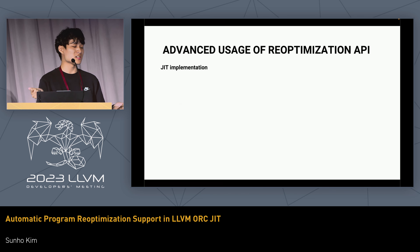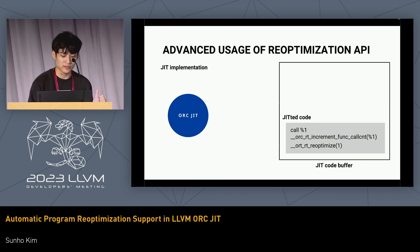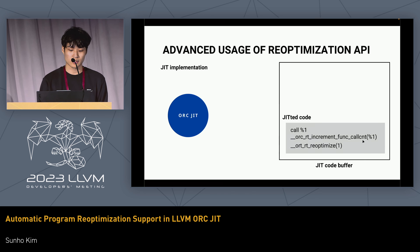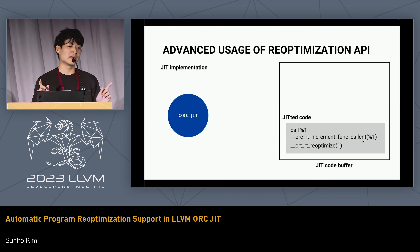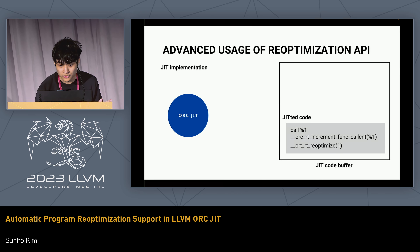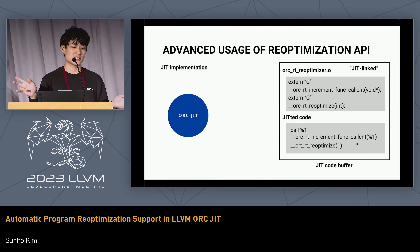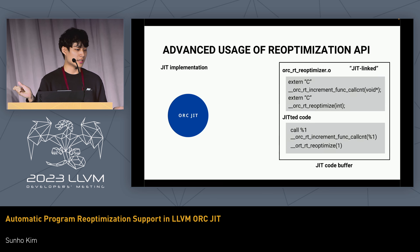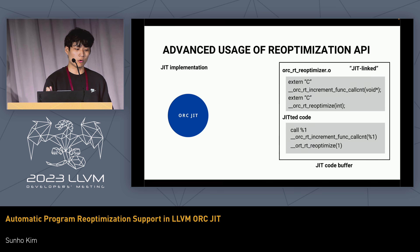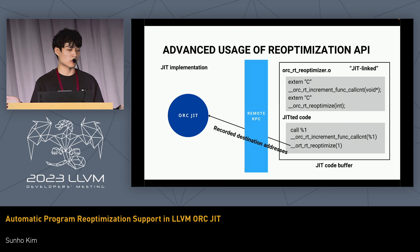Something worth mentioning about the JIT-side implementation of devirtualization: when devirtualization is going on, we add a small function call to an incremental function call counter used to collect destination addresses. Since g-linker can link any object file, we can implement this helper function in C++, compile it into a .o file, give it to ORC, and it will JIT-compile it into the JIT'd code. Since ORC API supports remote process execution, this can also happen across remote processes.